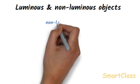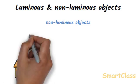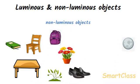An object which does not give out its own light is called a non-luminous object. The table, chair, book, flower pot, plants, bag, shoe, moon, etc. are all non-luminous objects. The non-luminous objects can be seen only when light coming from a luminous object like the sun, tube light, etc. falls on them. We can see non-luminous objects because they reflect light received from luminous objects into our eyes.